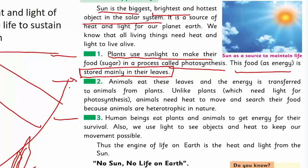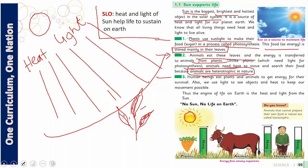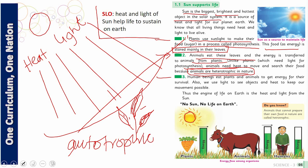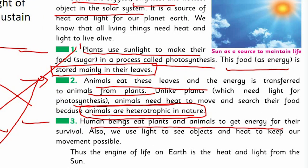In the second category, sunlight helps animals find their food and get energy. Animals eat the food that plants have prepared. Animals are heterotrophs — they are living things that cannot produce their own food. In contrast, living things like plants that produce their own food are called autotrophs. So plants are autotrophs — they produce their own food. In the third category, human beings eat plants and animals to get energy for their survival.